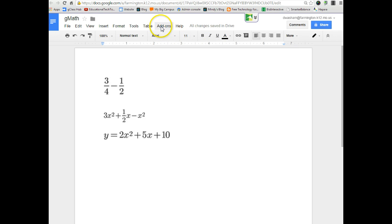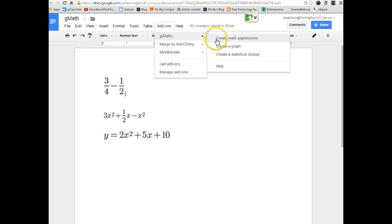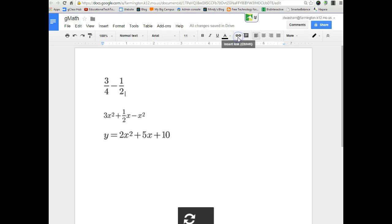Once it is added it will show up underneath your add-ons. You'll click add-ons and there's GMath, and you can create a math expression. You can also do some other tools that come along with it, but we want to create a math expression.